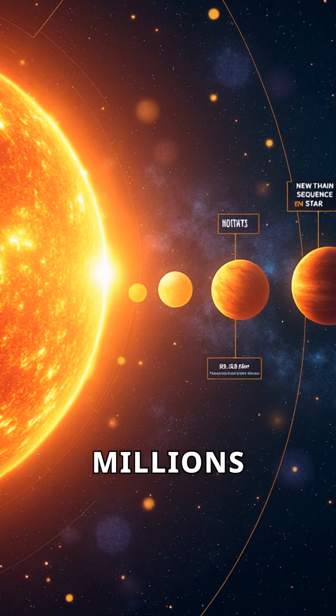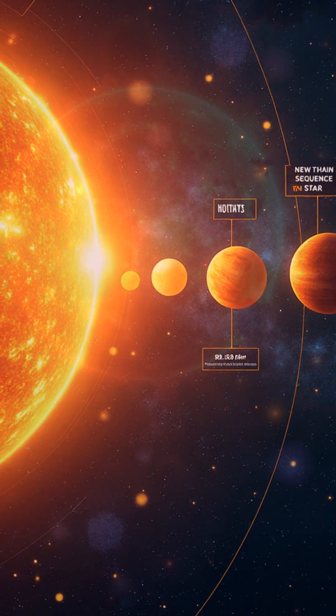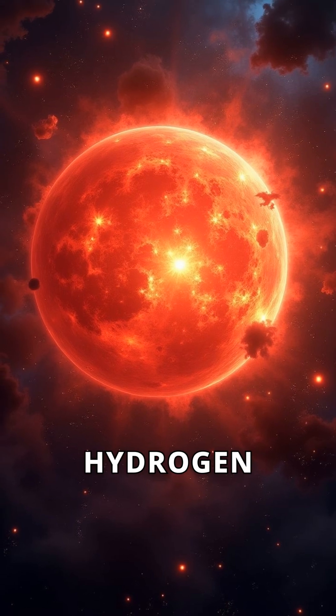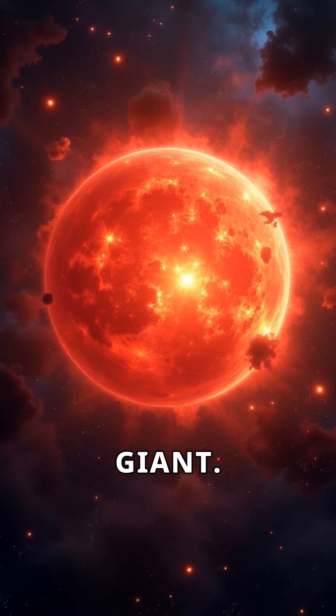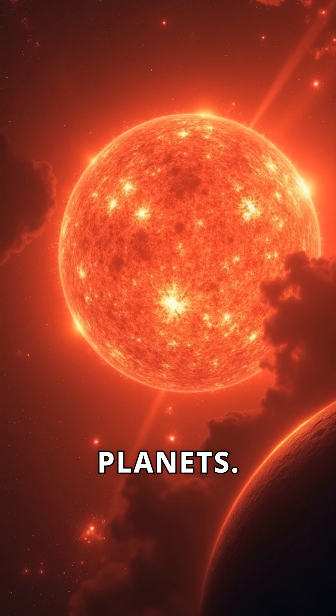The star spends millions of years in this stable phase. Eventually, it runs out of hydrogen fuel and expands into a red giant. In this phase, it engulfs nearby planets.